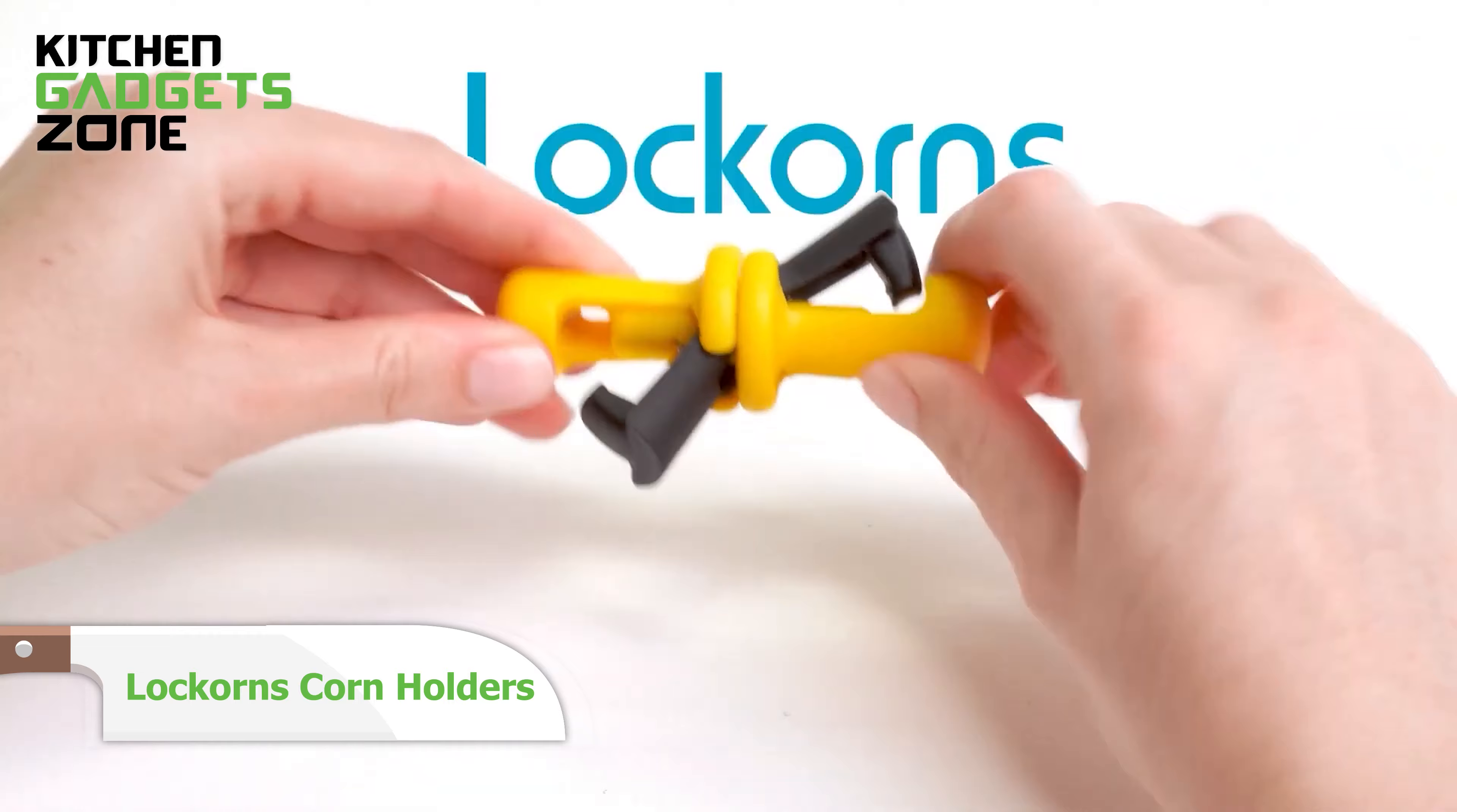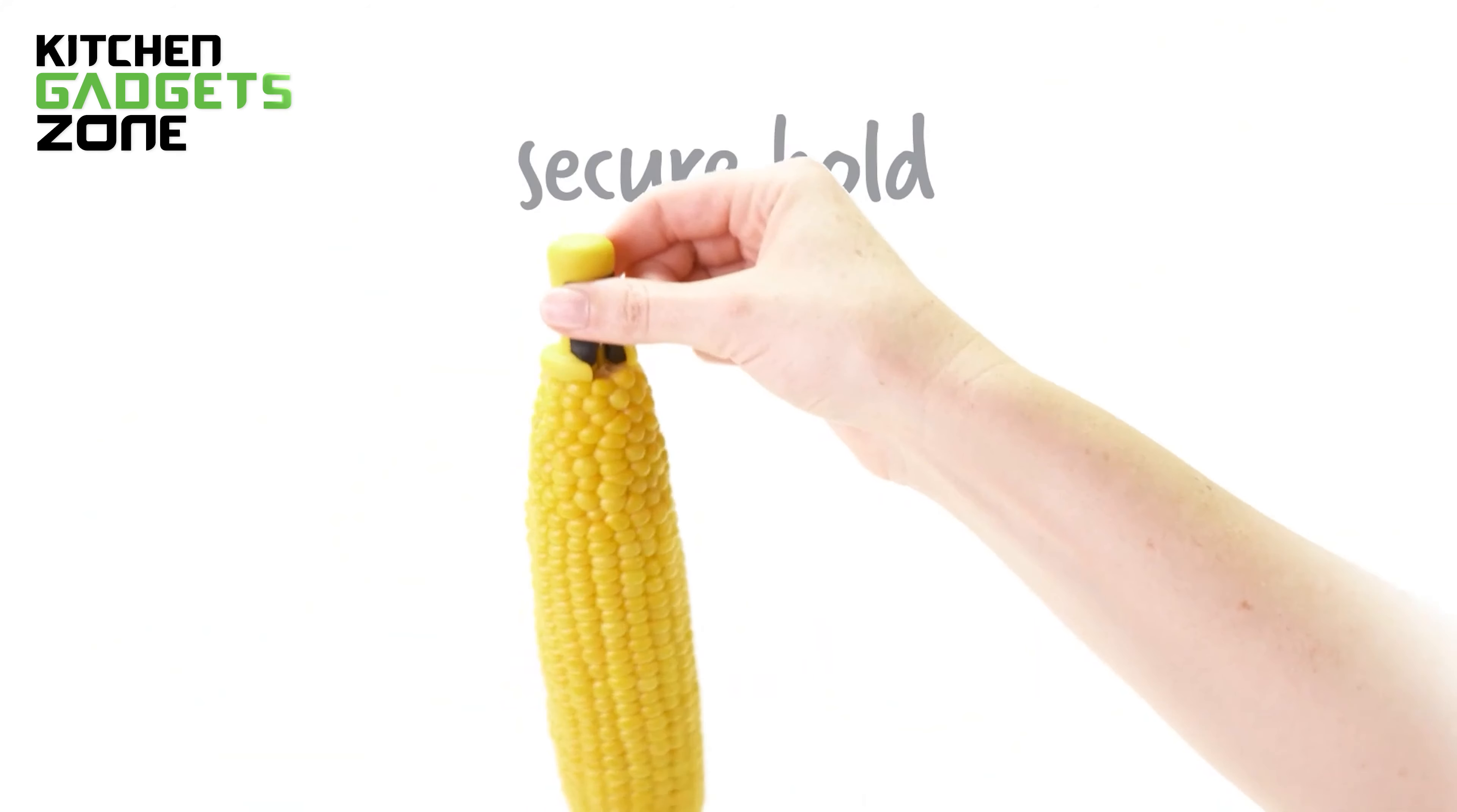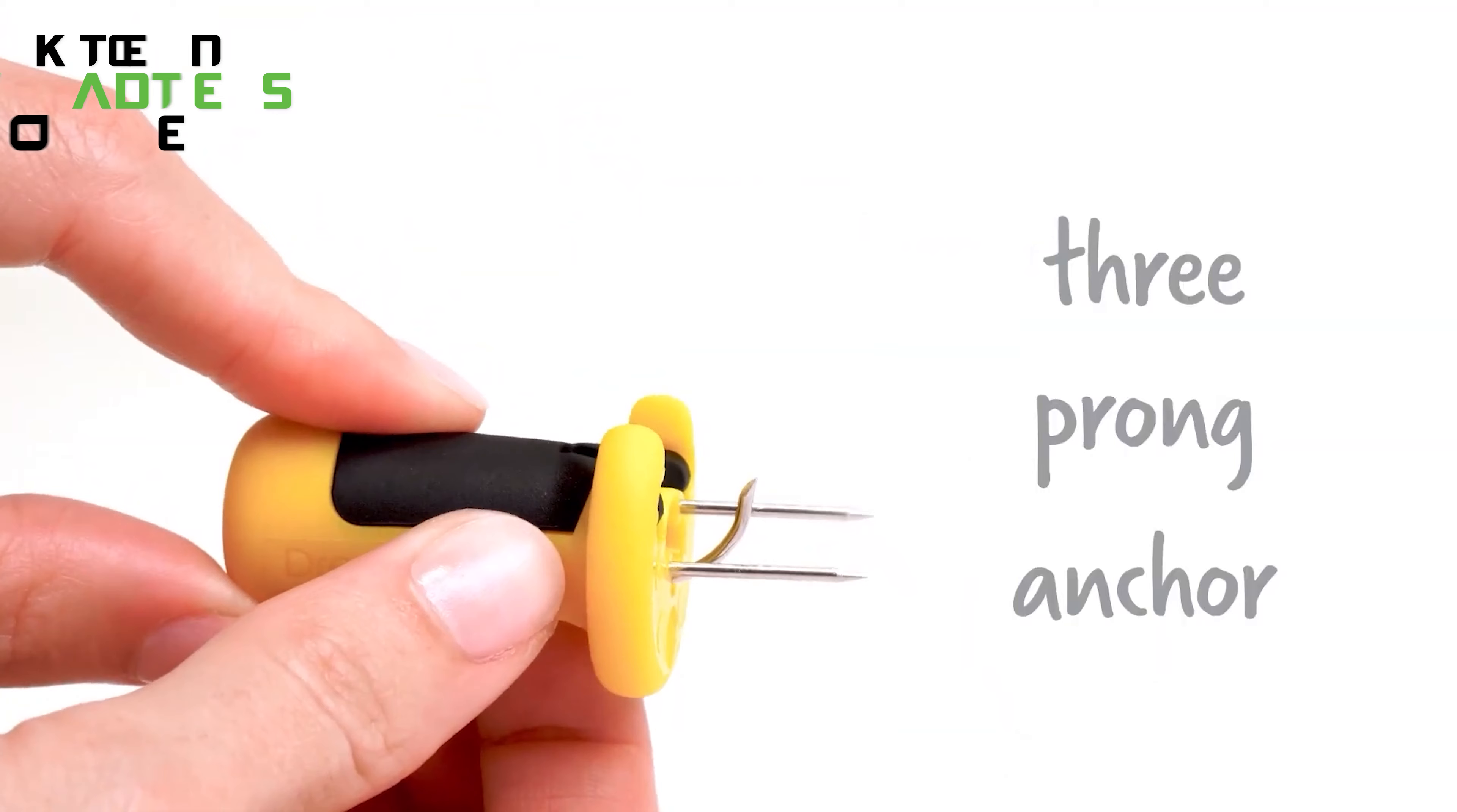Make every corn on the cob feast a breeze with Lockhorn's corn holders. These ingenious utensils combine two straight spikes with an anchoring hook to securely lock into the cob, ensuring your corn stays put while you enjoy every kernel. The unique three-prong anchor design prevents accidental removal, increasing safety for children, and giving parents peace of mind.